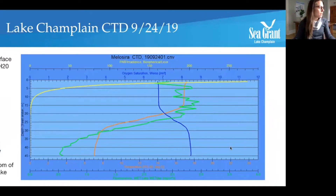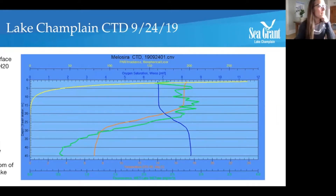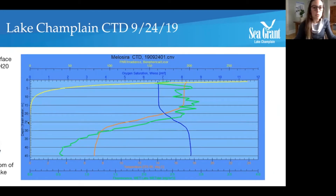We're going to look at a couple graphs from our CTD here from last year, and I want to show you the type of information that these sensors give us. Looking at the CTD here, you can see it's kind of a complicated graph, but the most important thing to note is that everything is relative to depth. On the left-hand side, up at the top is the surface of the water, and as you move down, that whole axis is all just depth, bringing you to the bottom of the lake. We have color-coded lines, and each of those lines is one of the sensors that we've talked about.